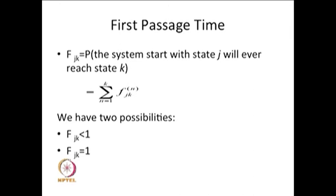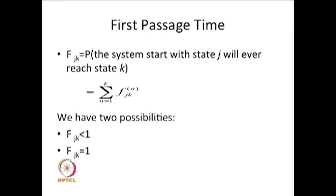We have two cases. One is when f_jk is less than one — what is the situation corresponding to this probability being less than one? The other case of interest is when f_jk is equal to one, meaning with probability one you will ever visit state k starting from state j, versus this probability being less than one. If it is less than one, then with probability one minus f_jk there is a possibility you would never visit state k starting from state j. The second case says with probability one you will always reach state k, whatever be the number of steps starting from state j.